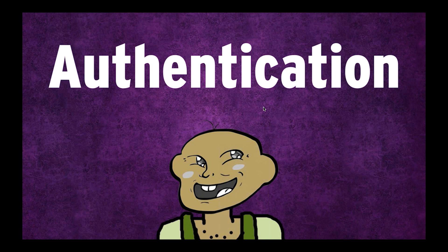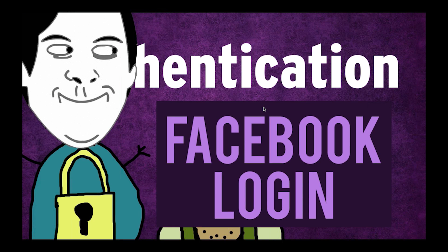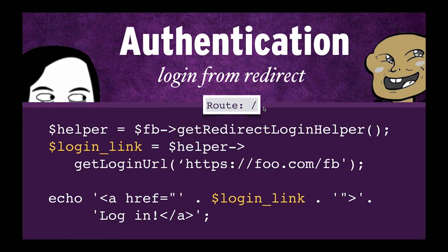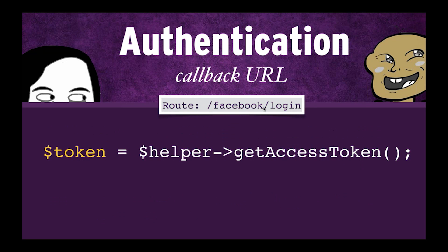So let's talk about authenticating the users. Facebook login is just OAuth 2.0, and the way we do that with the Facebook SDK is we use this thing called the redirect login helper. You can grab an instance of that from the super service with the getRedirectLoginHelper method. Once you get an instance of that, you can generate an authorization URL with the getLoginURL method and send in, as an argument, the callback — where you want the user to be redirected after they approve or deny your app. You show that link to the user, they click on it, and in the callback all you've got to do is use the getAccessToken method, and it'll return an access token if all goes well.